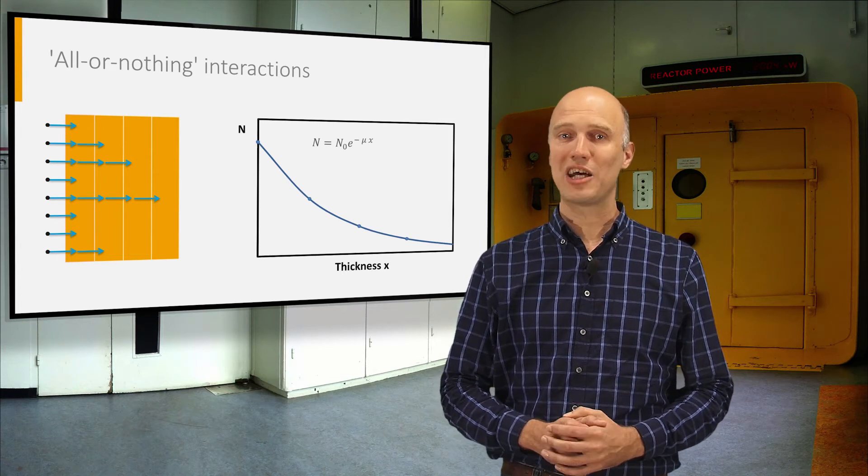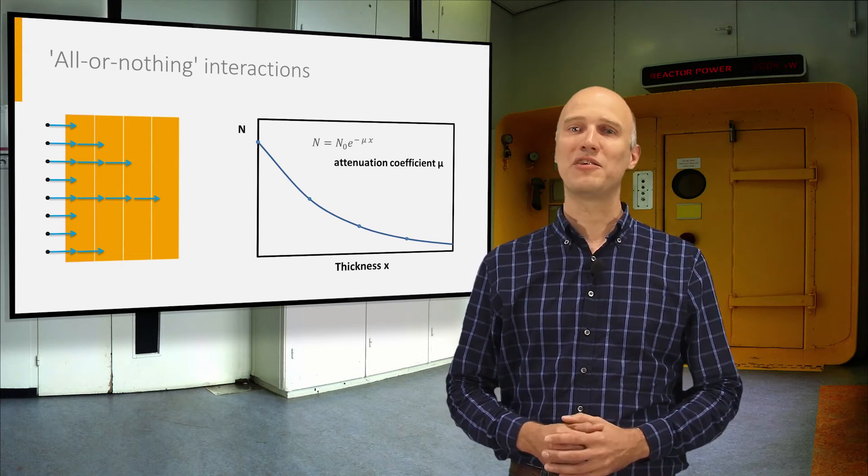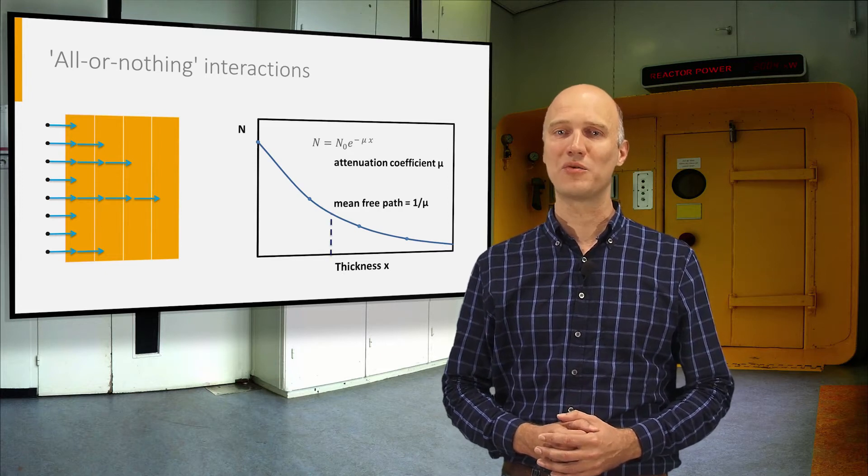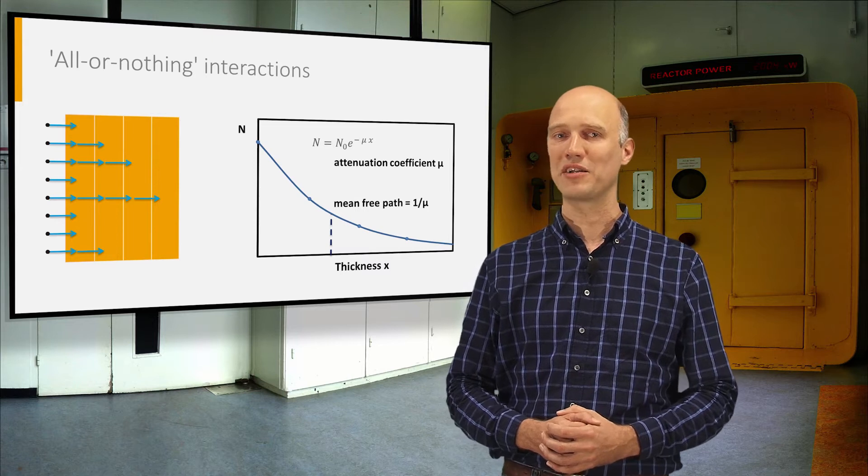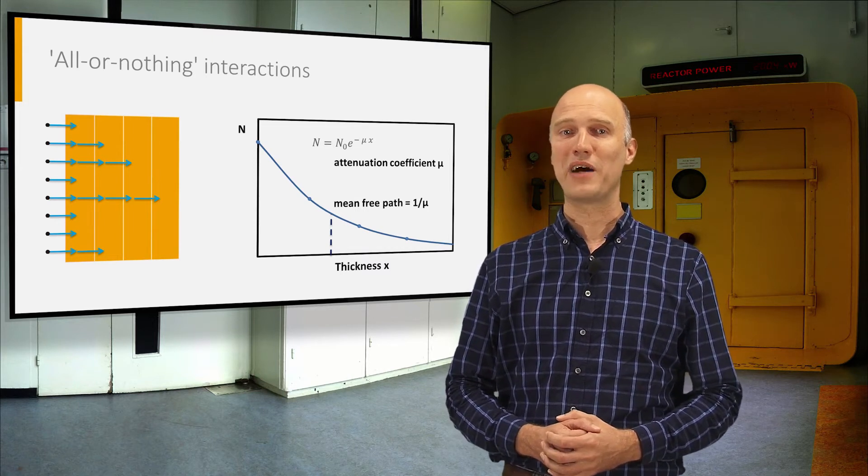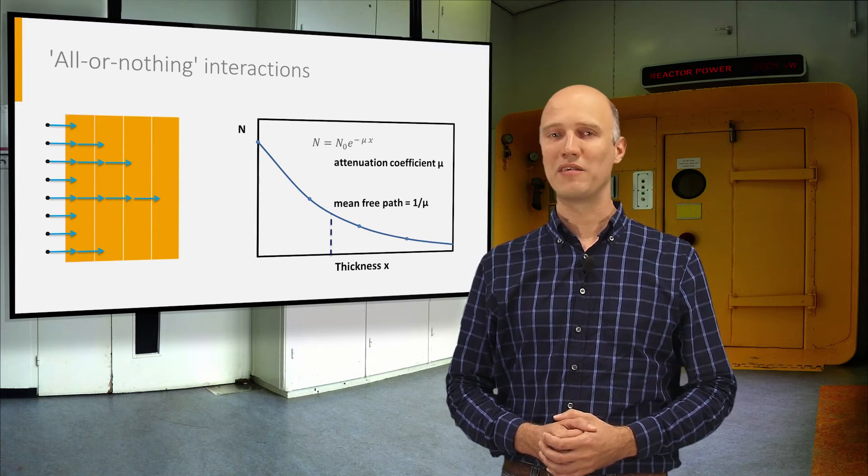In this case, no range can be defined, but rather an attenuation coefficient mu and a mean-free path, which is the average distance traveled by a particle before it interacts. The value of this mean-free path is given by 1 divided by mu.